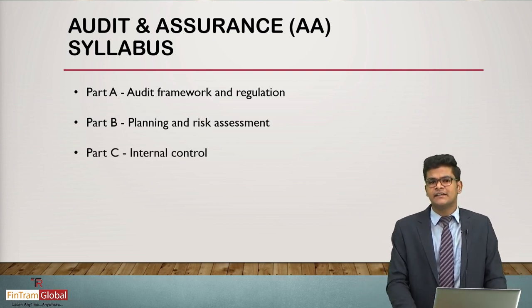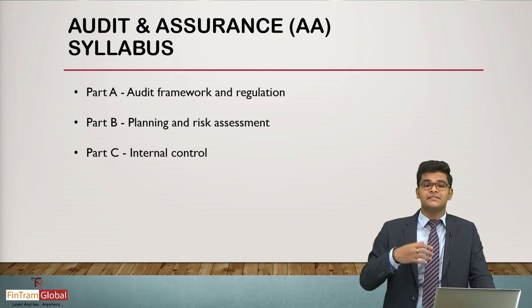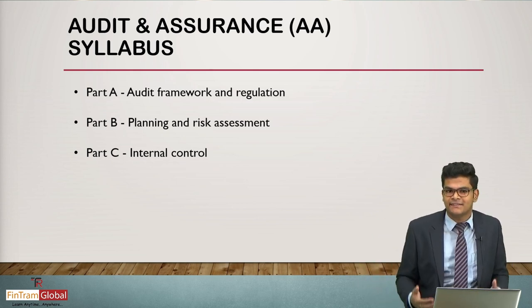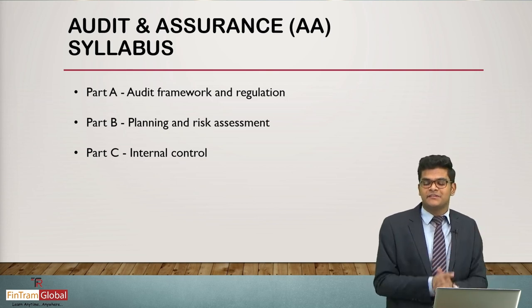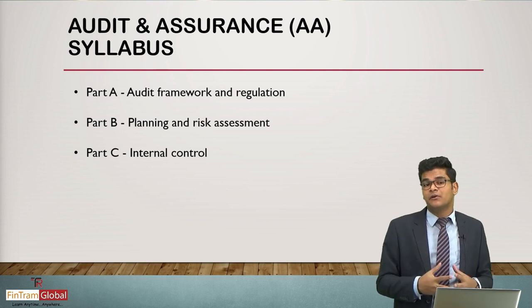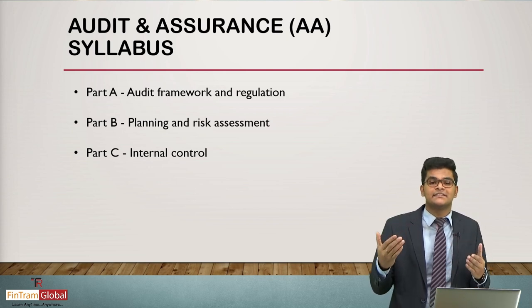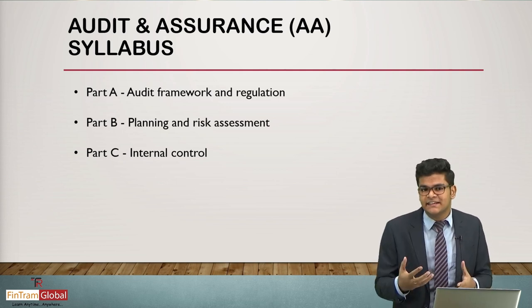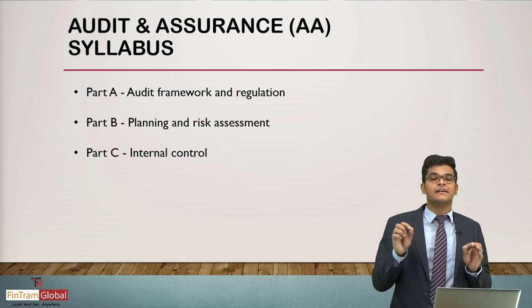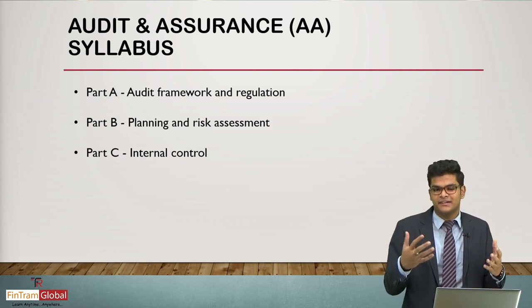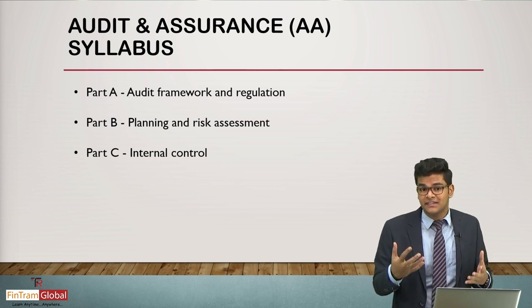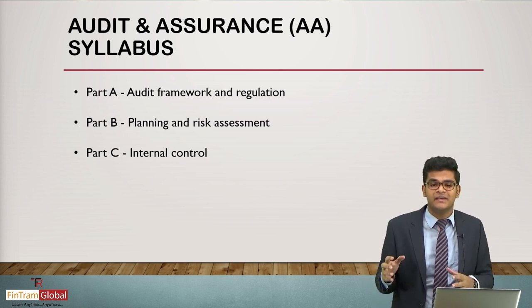Moving on to Part C: Internal Controls. Internal controls can be said to be the immune system of a particular organization. Just as the immune system prevents diseases, internal controls prevent fraudulent activities or errors that can occur within the financial statement preparation process or any other systems within the organization. Organizations implement these control measures to guard against such risks. Auditors may review the internal controls and identify deficiencies — all of which will be learned within this syllabus area.